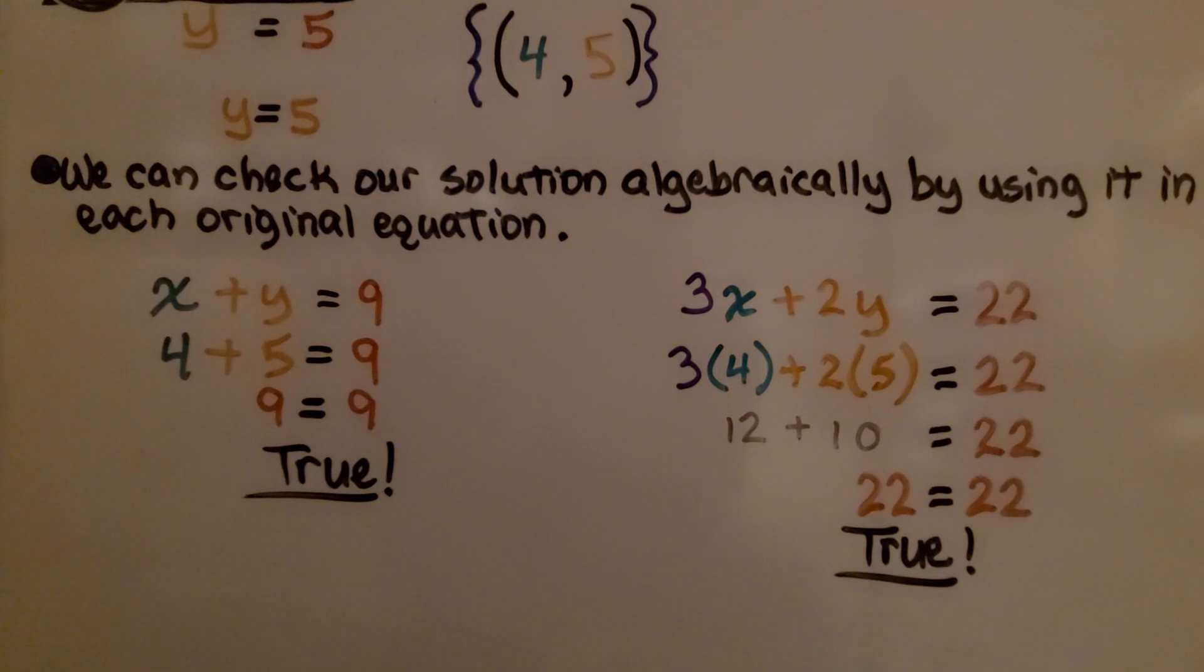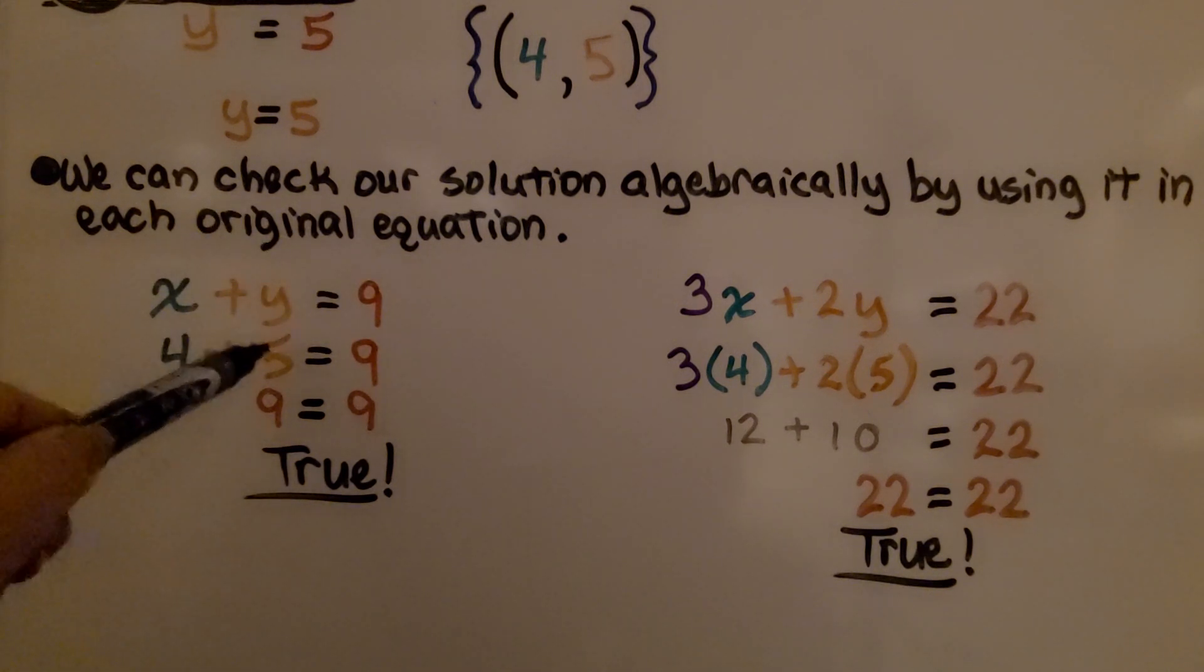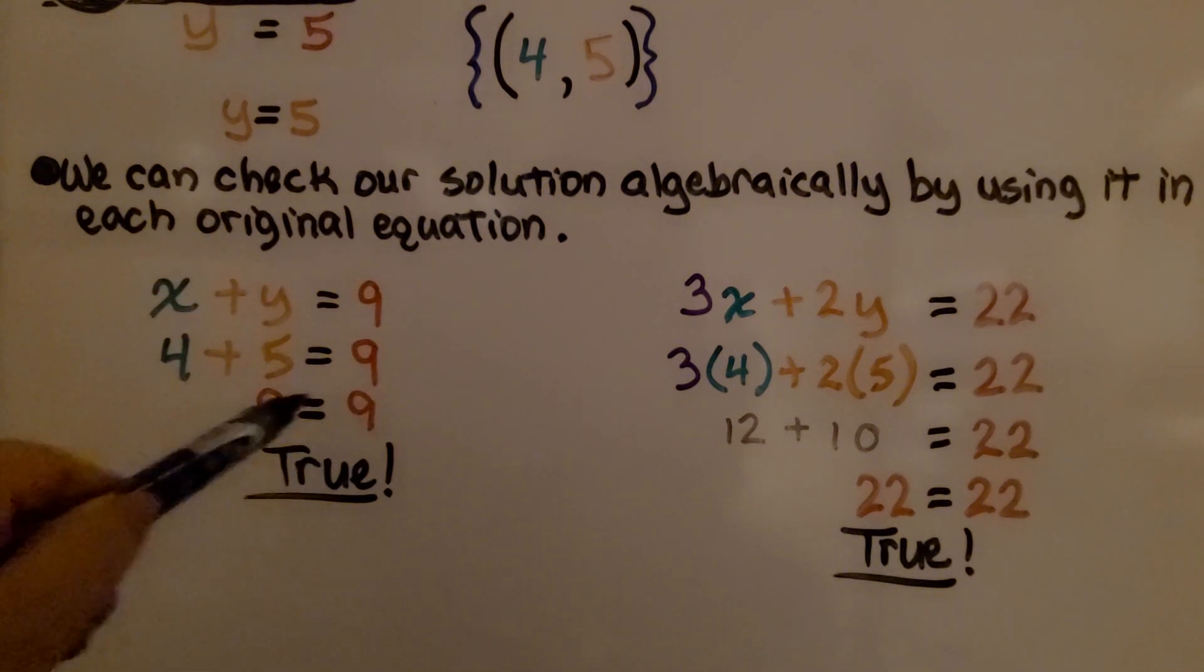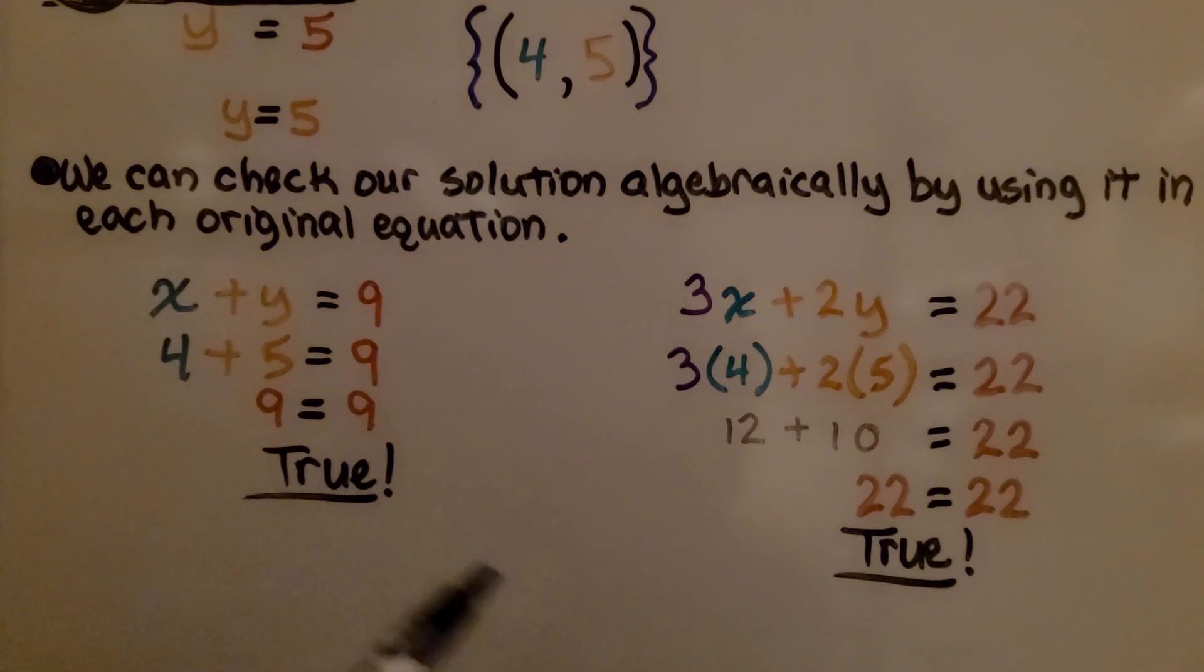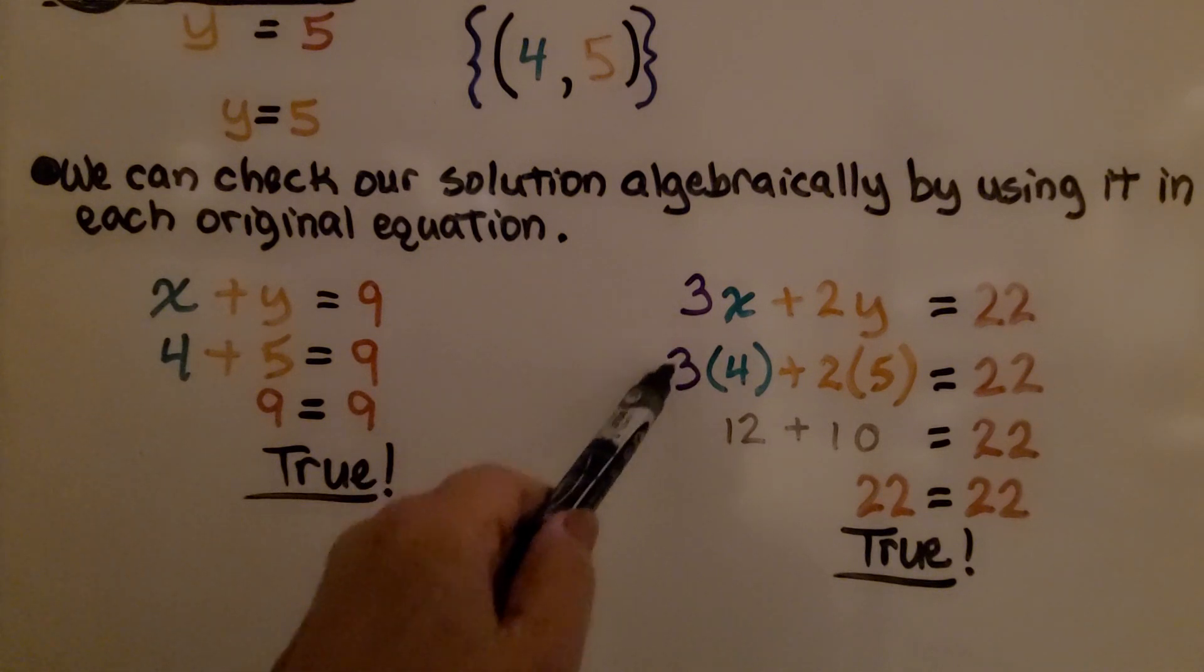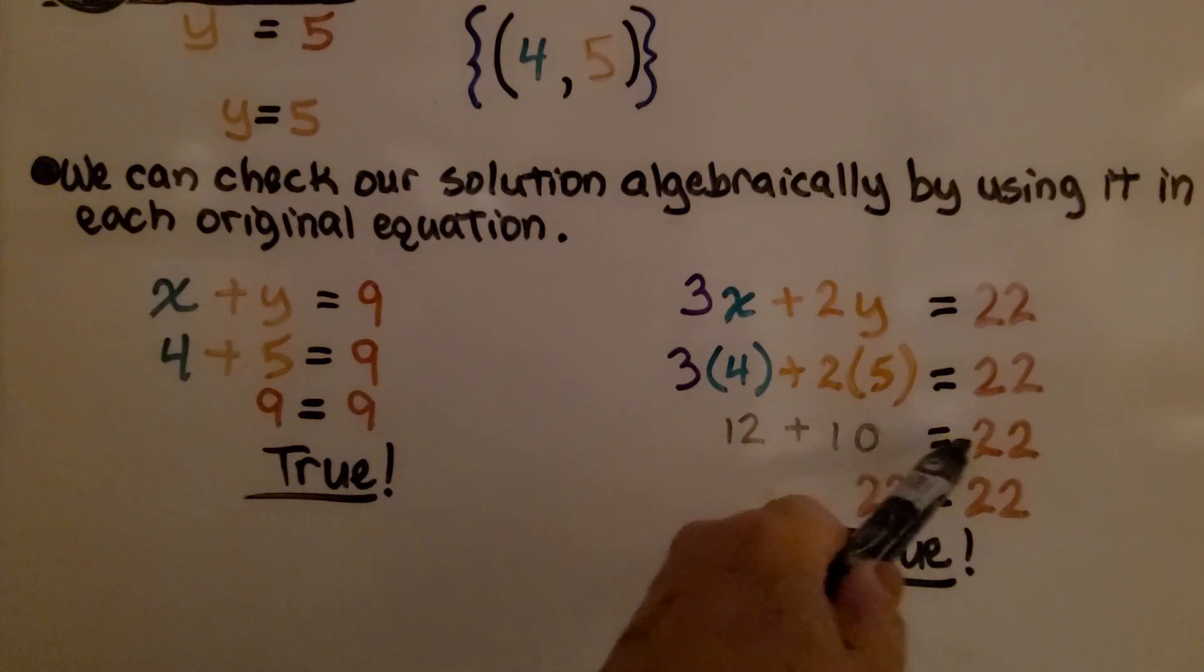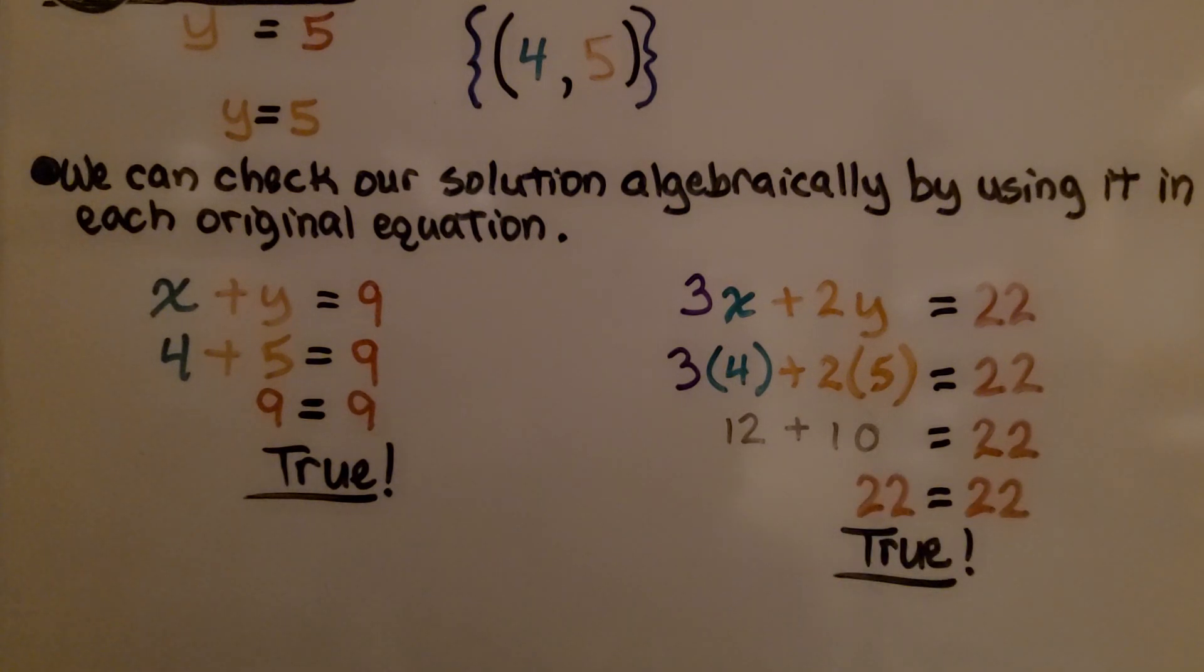We check our solution algebraically by using it in each original equation. We had x plus y equals 9. Now we have 4 plus 5 equals 9, and 9 equals 9, so that's true. And when we put 4 for x and 5 for y into this equation, we have 3 times 4, which is 12, plus 2 times 5, which is 10, and that equals 22. So that's true.